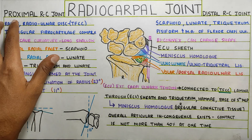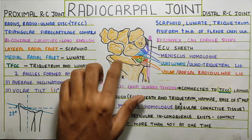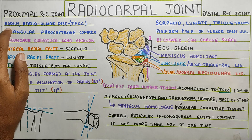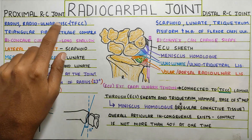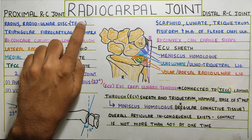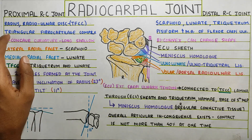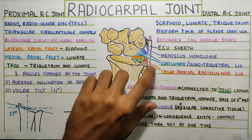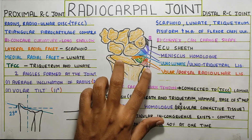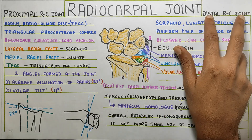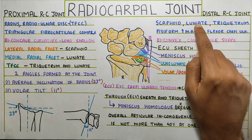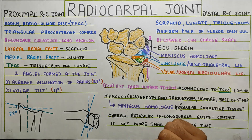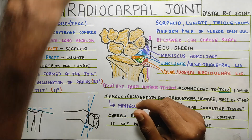Coming to the proximal radiocarpal part — that is the articulating surface — it has the radius, it has the radio-ulnar disc, also called the TFCC, that is the triangular fibrocartilage complex, and that forms your proximal part. Whereas the distal part is formed by your scaphoid, lunate, triquetrum, and pisiform. Now let's have a look at this.